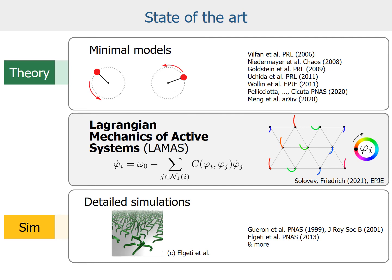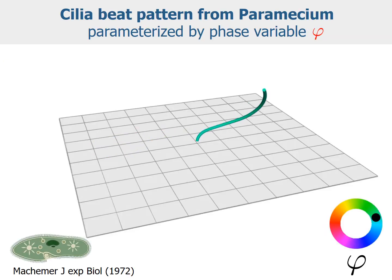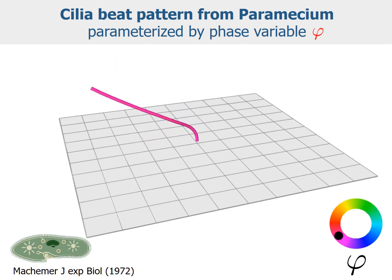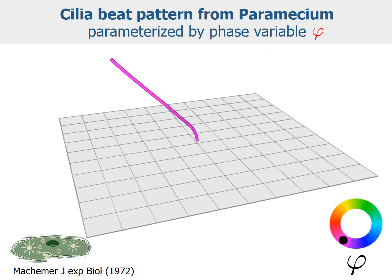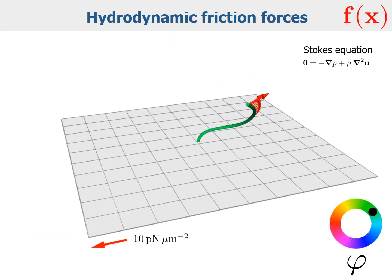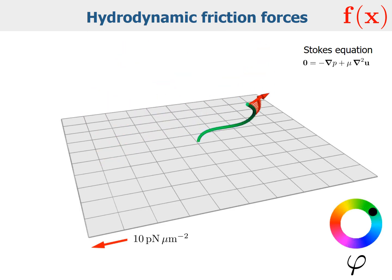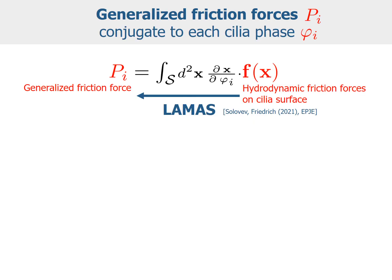We try to bridge these two approaches by a multi-scale modeling approach termed Lagrangian Mechanics of Active Systems. Specifically, we take an experimental beat pattern originally measured by Machemer for paramecium. This periodic bending wave is parametrized by a phase variable phi — think of phi as a clock variable. We plug this experimental beat pattern into hydrodynamic simulations and compute for each shape the full surface density of hydrodynamic friction forces.